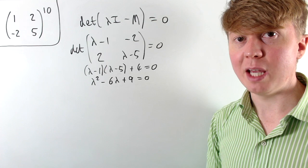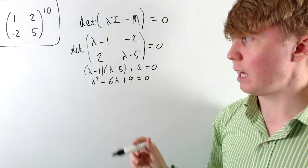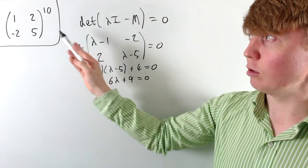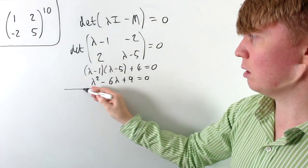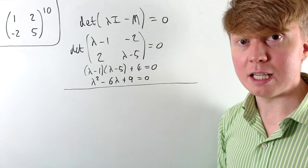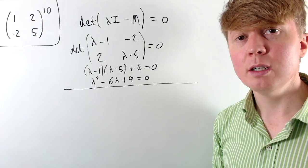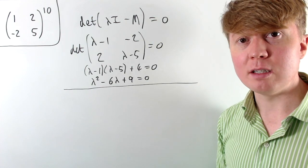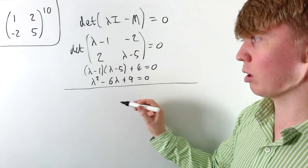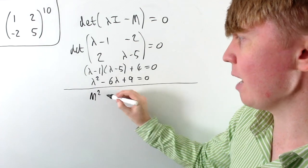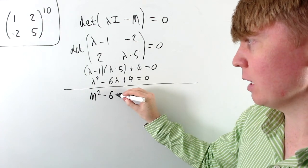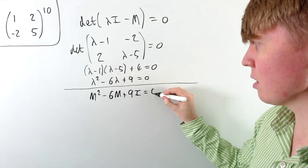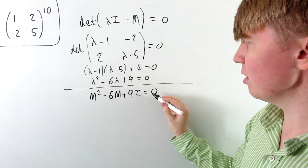Unfortunately, this original matrix M isn't diagonalizable. But we don't need to give up and actually carry out the multiplication 10 times — there is still a nice shortcut which uses the Cayley-Hamilton theorem. The Cayley-Hamilton theorem tells us that our matrix M satisfies its own characteristic polynomial, so we can replace lambda by M, giving us M squared minus 6M plus 9 times the identity matrix equals the zero matrix.